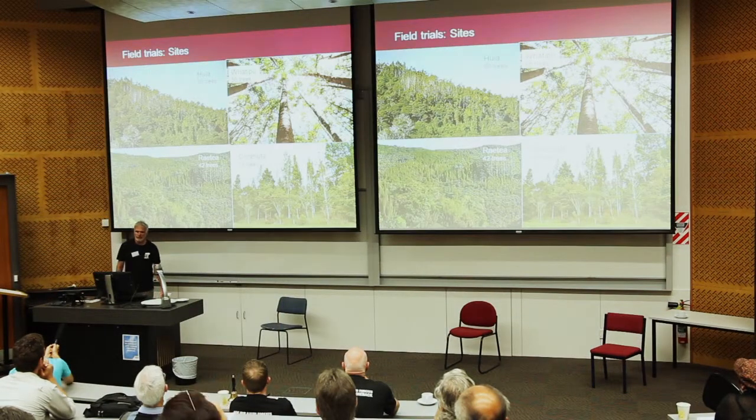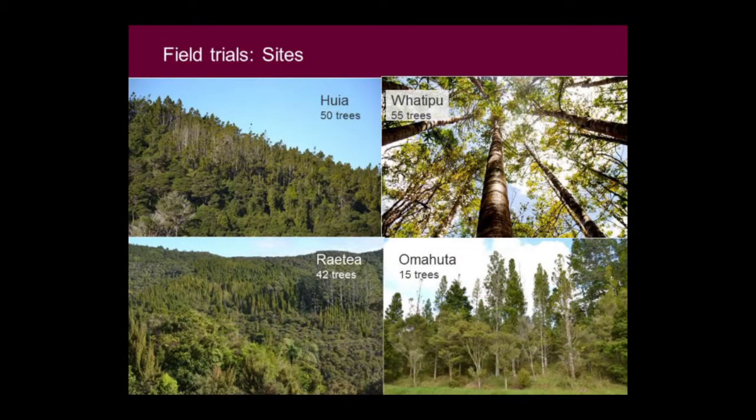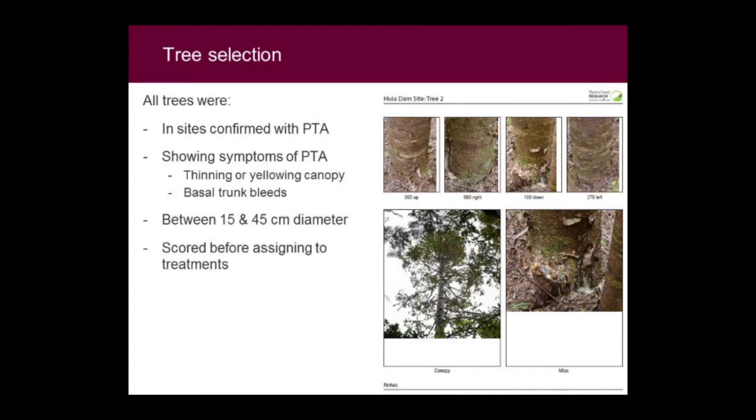Moving on to the forest trials — we have four sites. The Huia and Pātapu sites were naturally regenerating stands in the Waitākeres, around 100 years old, from natural regeneration after logging. The two Northland sites — Rātea and Ōmahuta — were planted as part of that planting in the 1950s through 60s, with plants probably sourced from Waipua. All of our trial sites were infested with PTA, and all the trees used were showing symptoms at the start — either canopy thinning or bleeding cankers around the base.